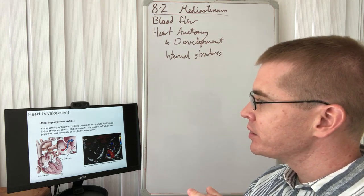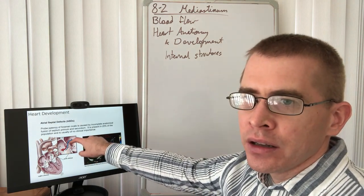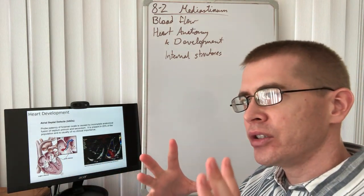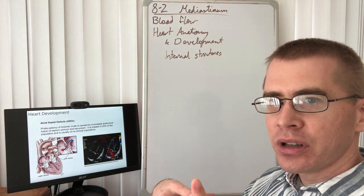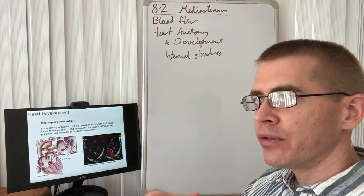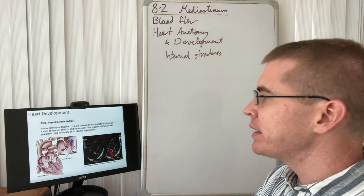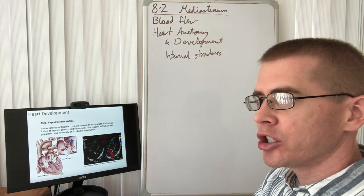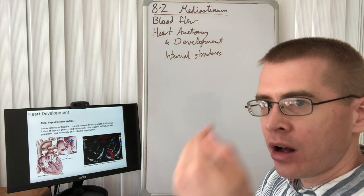But there are some cases where that foramen ovale is so poorly formed that it does result in cyanosis or poor blood flow, lack of oxygenation of the blood. And so that is a condition in which surgery has to be performed in order to close off that foramen.